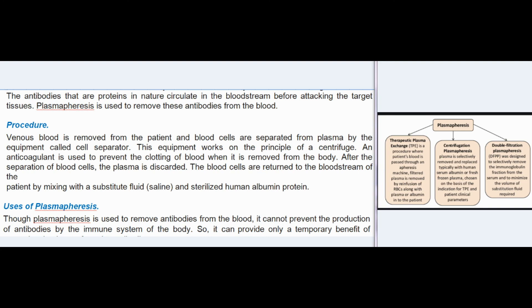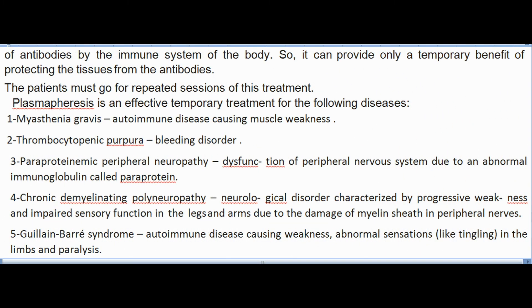Uses of plasmapheresis: Though it removes antibodies from blood, it cannot prevent their production by the immune system, providing only temporary benefit. Patients must undergo repeated sessions. Diseases treated include: (1) myasthenia gravis — autoimmune disease causing muscle weakness; (2) thrombocytopenic purpura — bleeding disorder; (3) paraproteinemic peripheral neuropathy — dysfunction of peripheral nervous system due to abnormal immunoglobulin (paraprotein); (4) chronic demyelinating polyneuropathy — neurological disorder with progressive weakness and impaired sensory function due to myelin sheath damage.